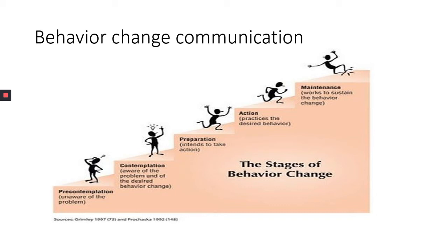Stage number two is contemplation — they are aware of the problem and decide on behavior change. This is where you come in: create awareness that jiggers are a very big problem. You create awareness at this stage and tell them there is a problem. Once you have passed the information, the next stage will be preparation, where they will intend to take action.